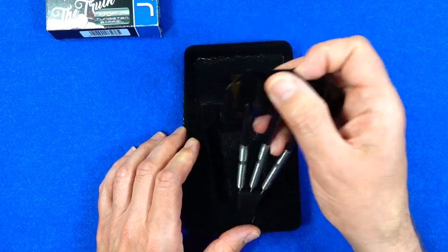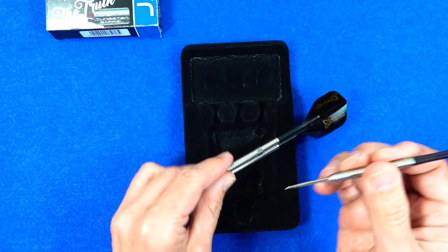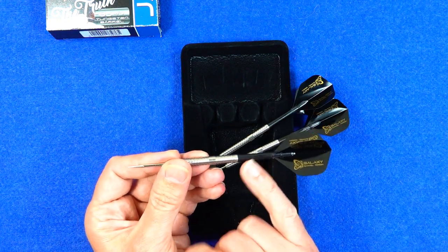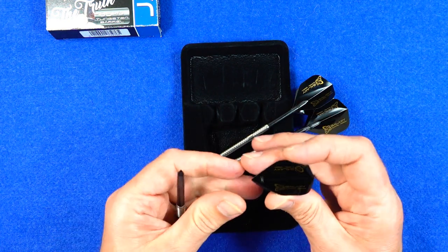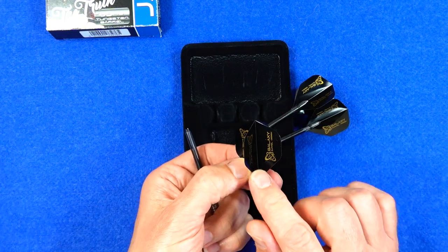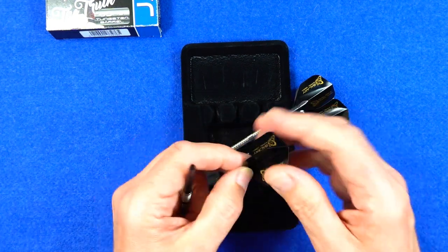They come supplied with the in between L-Style Laro stems and the flights - Galaxy standard shape, pre-slotted for the rings.